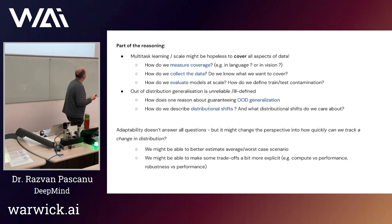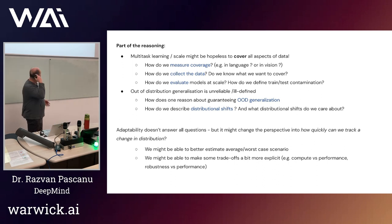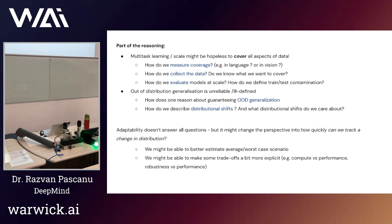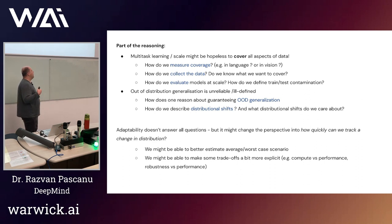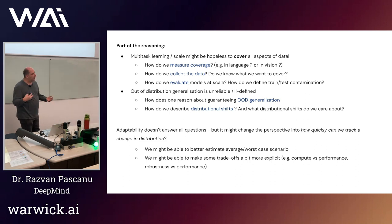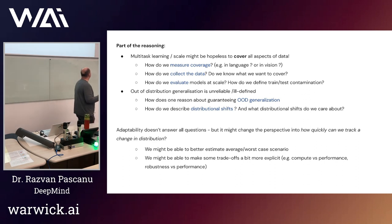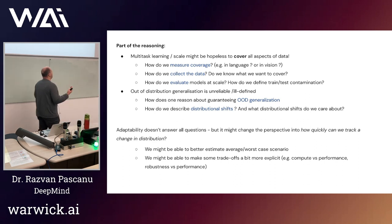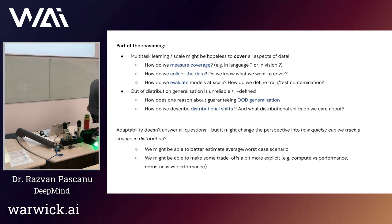Thinking about adaptability changes the perspective a little. It forces us to think about how quickly a system can track a change in distribution. Maybe it's a bit easier to talk about worst-case and best-case scenarios, and we can use tools from optimization to think about this — almost as a convergence problem. We might be able to make trade-offs more explicit in terms of how much compute you need to gain how much performance, or how quickly you extract information out of the data.